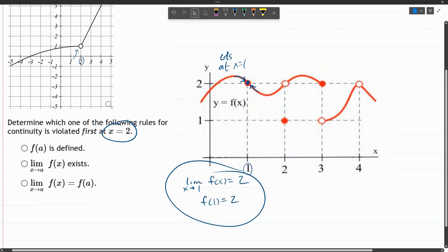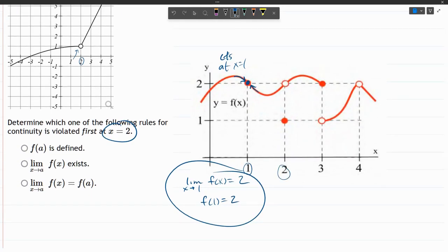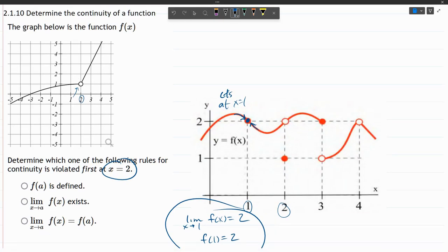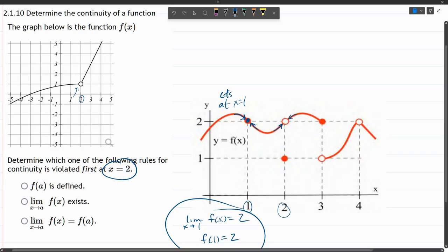So we're going to look at the next x value, which is two. Now we got a problem at two. The limit exists because if you do the same thing, if you approach both sides, the limit exists and is equal to, again, the y value of two.